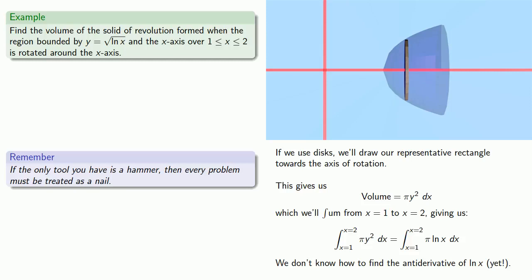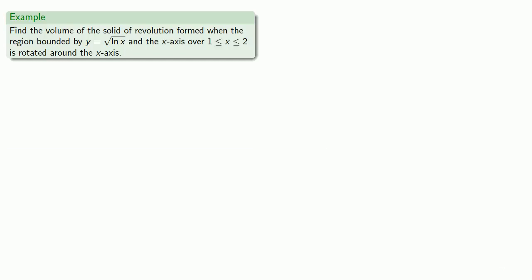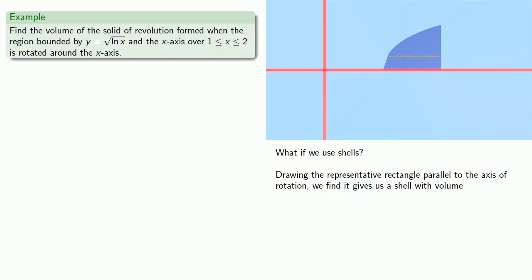Once again we'll graph our region. This time we'll draw a representative rectangle parallel to the axis of rotation. Now we'll rotate everything around the x-axis. Our representative rectangle becomes a representative shell, where the length is equal to the circumference of a circle with radius y, or 2π y.